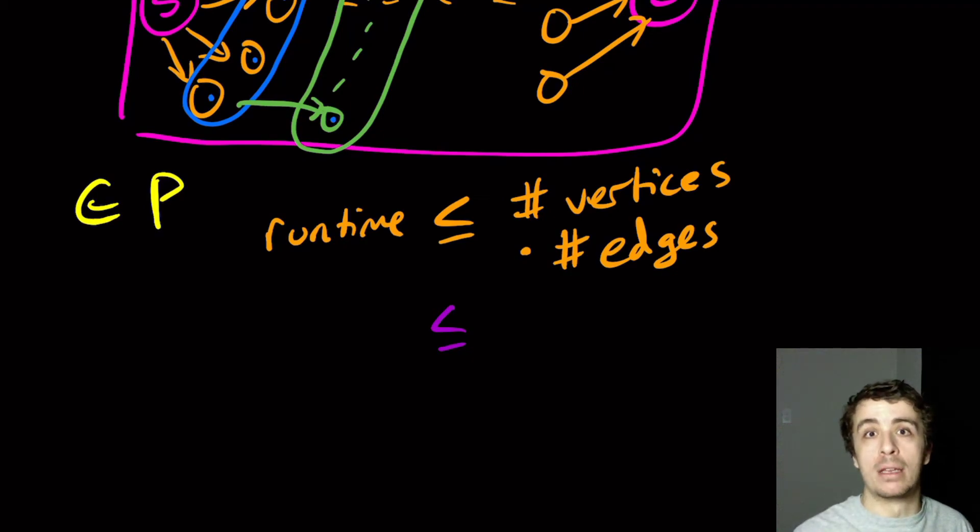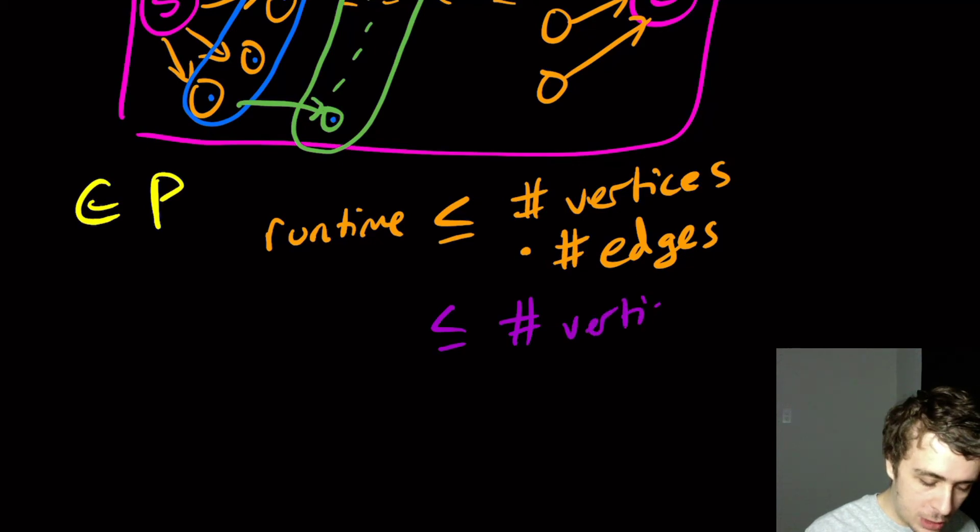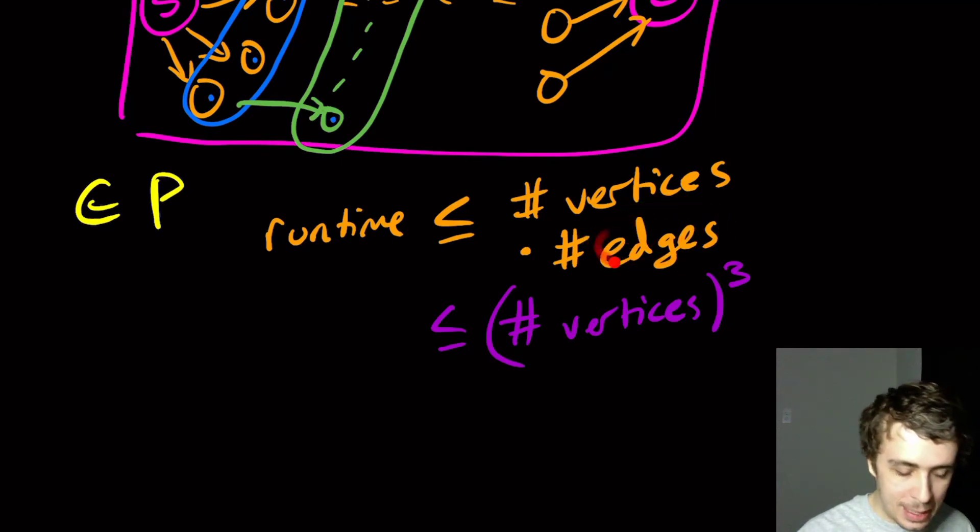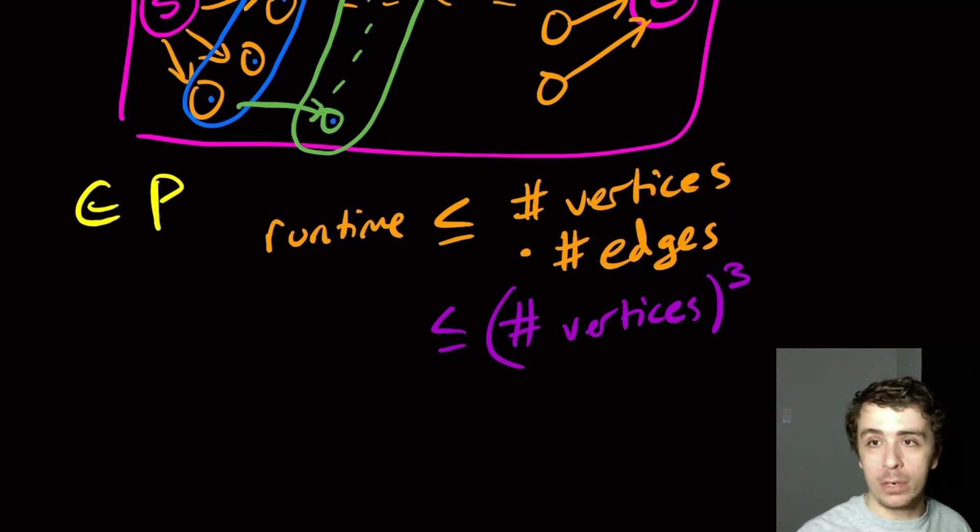So this is at most the number of vertices to the power of three, because the edges are at most n squared, where n is the number of vertices, so it's at most the number of vertices cubed. And so therefore, maybe I should put a big O on this, but it really doesn't matter. So the number of vertices is basically the size of the graph, in some sense. And therefore, we take this to the power of three. Well, that's a polynomial in the size of the graph. And so therefore, it runs in polynomial time.